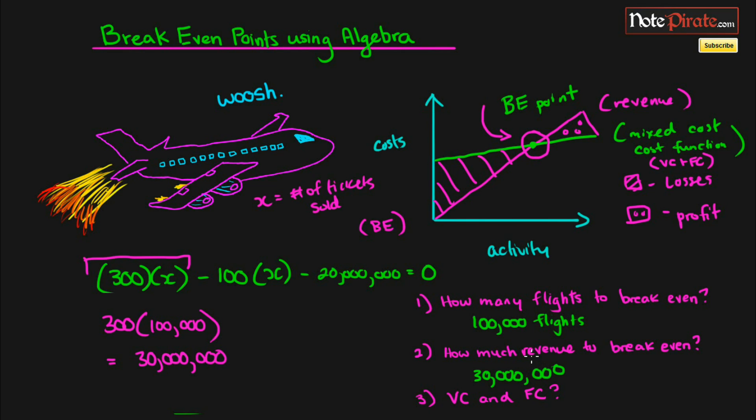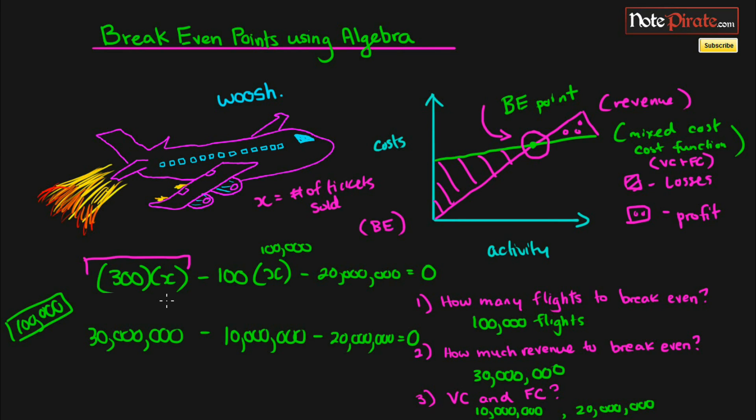What are the fixed and the variable costs? Well, 100 times 100,000 because that's the break-even point, the total variable cost is going to be $10 million, and the fixed cost is already given, which is $20 million. This way we can check our work to see that it's correct, in that $30 million of revenue at an activity level of 100,000 tickets will have $10 million of variable cost and $20 million of fixed cost. That way it will equal zero, so we know that we've actually solved for it correctly.